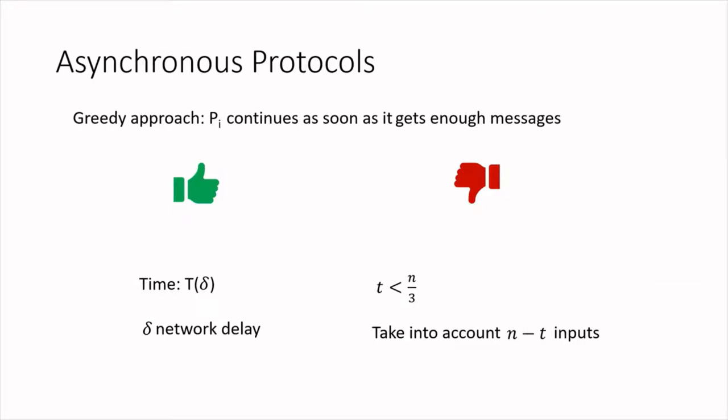So how can we design fast protocols in settings where the delay is hard to predict? One option is to use asynchronous protocols. In an asynchronous protocol, we do not need to know any upper bound on delay. These protocols are message-driven, and intuitively one can think of an asynchronous protocol as a greedy protocol. The idea is that as soon as a party gets enough messages to proceed, they proceed. On the upside, the speed of an asynchronous protocol is proportional to the actual network delay small delta.